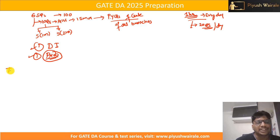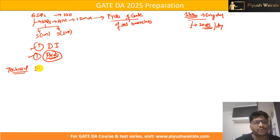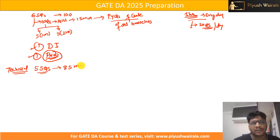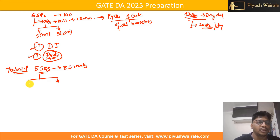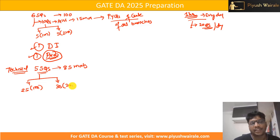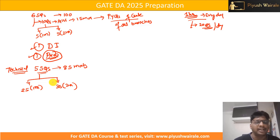Now let's talk about the technical section. Here we have 55 questions which consist of 85 marks. Out of these 55 questions, 25 questions will be of one mark each and 30 questions will be of two marks each. This is the exam pattern for the GATE exam for any branch.